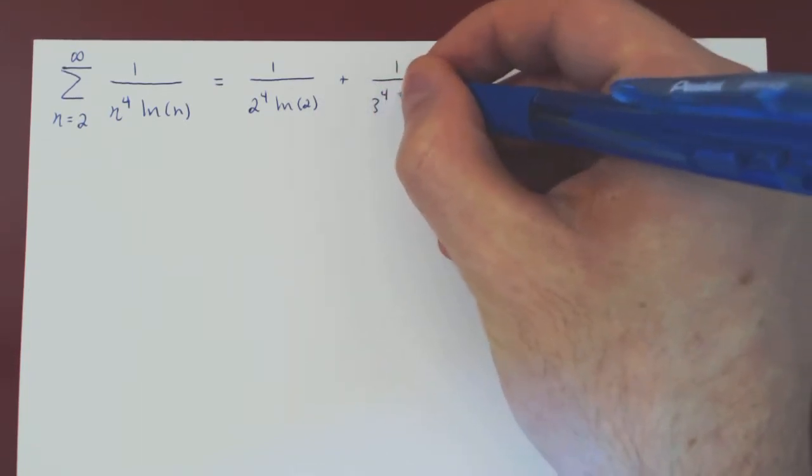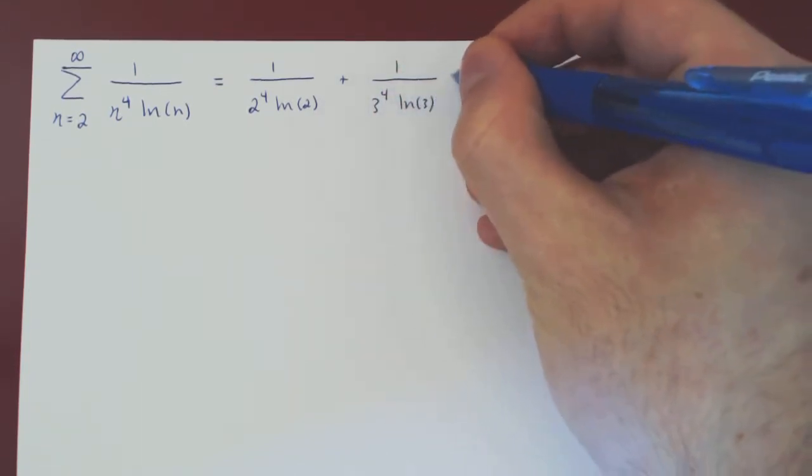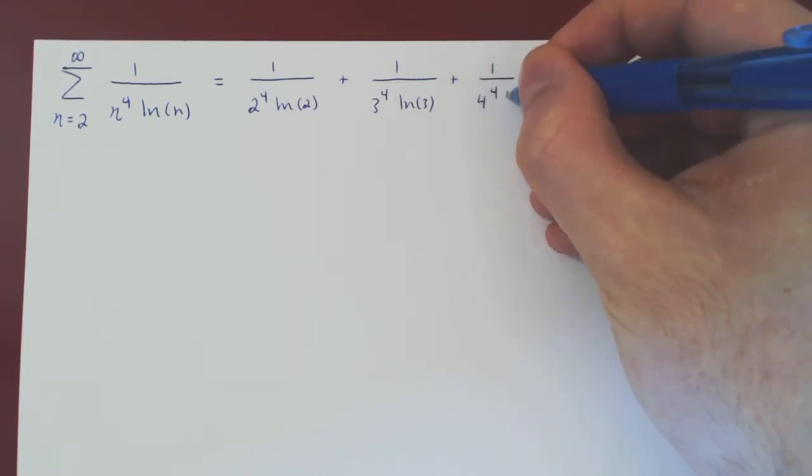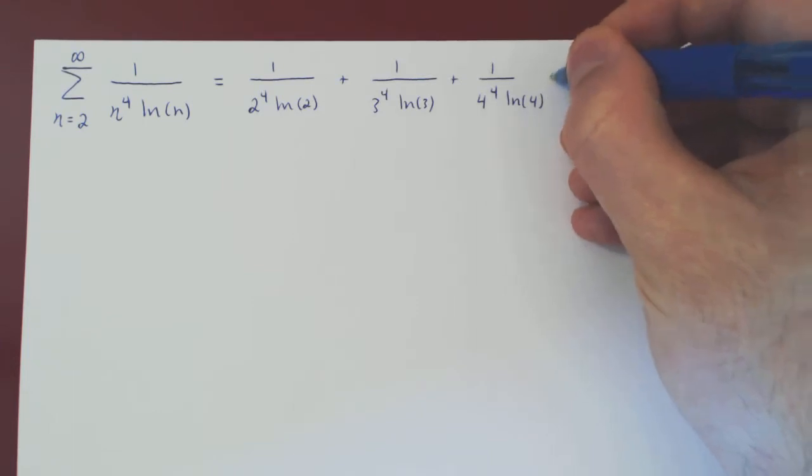1 over 3 to the 4, ln of 3, plus when n is 4, 1 over 4 to the 4, ln of 4, plus and so on.